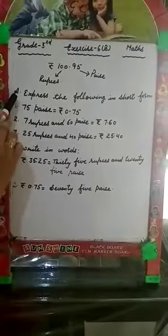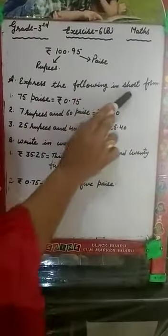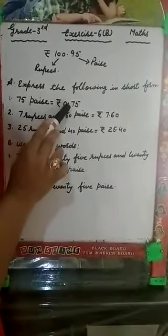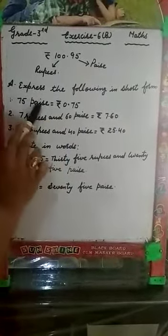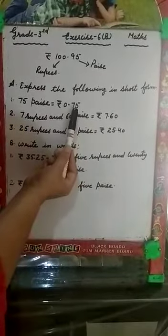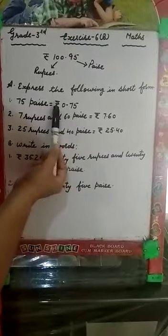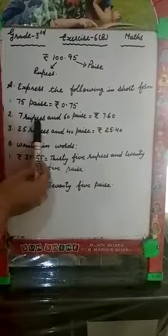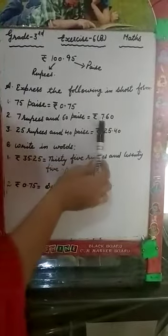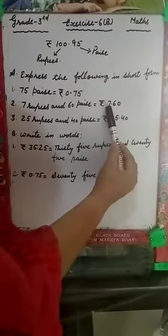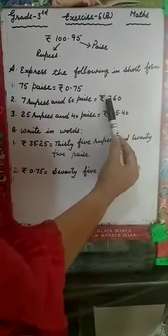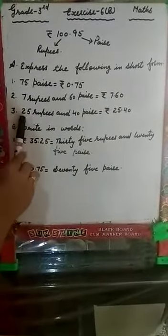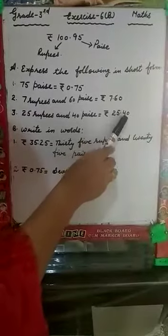The first part of this exercise is to express the following in short form. Short form means small form. First question: 75 paise. Write down the decimal. Since paise is always written on the right side, we write 0.75, and in front we make the rupees sign. Second question: 7 rupees and 60 paise. Since rupees are written on the left side and paise on the right side, we write 7.60 with the rupees sign. Next: 25.40 paise — written as 25.40.